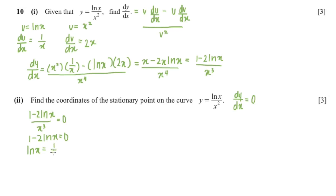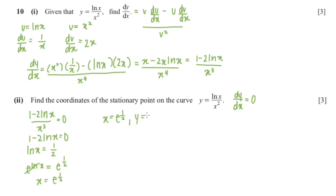I'm going to apply the exponential to both sides, so e^(ln x) equals e^(1/2). The exponential and ln cancel out, leaving x equals e^(1/2). When x equals e^(1/2), y equals ln(e^(1/2)) over e squared.